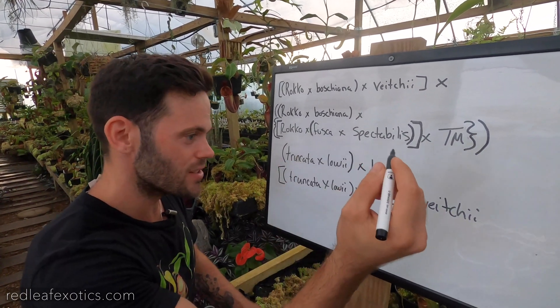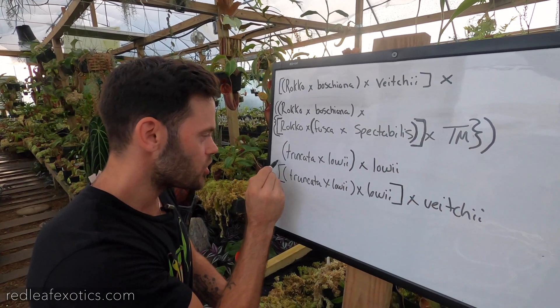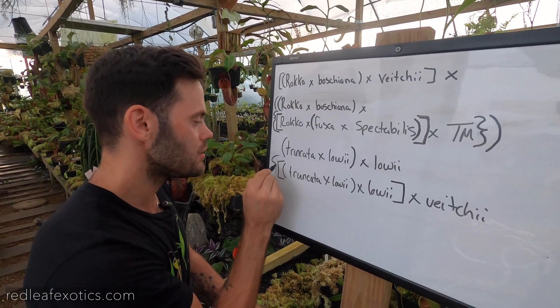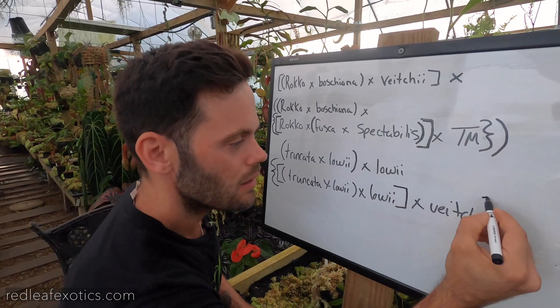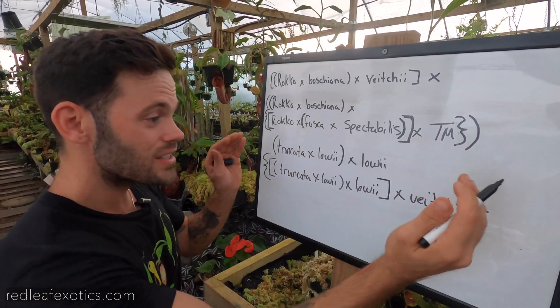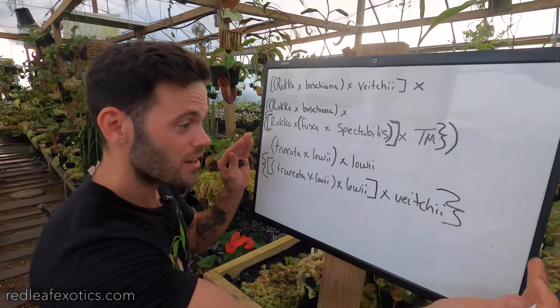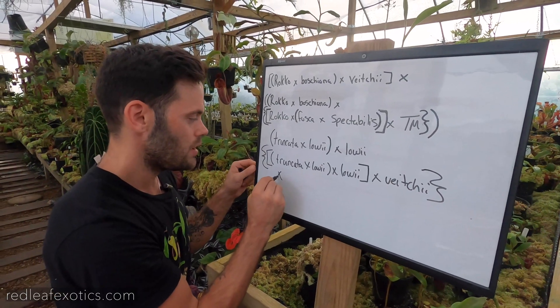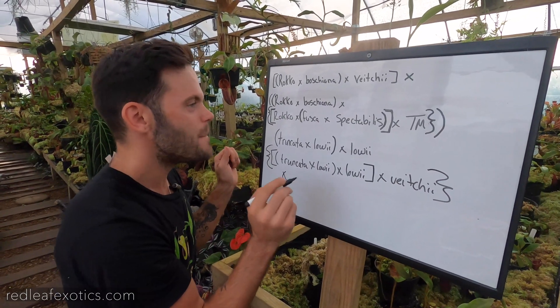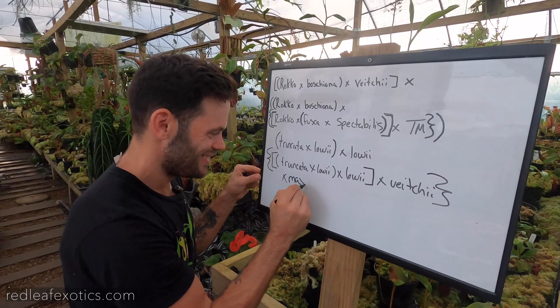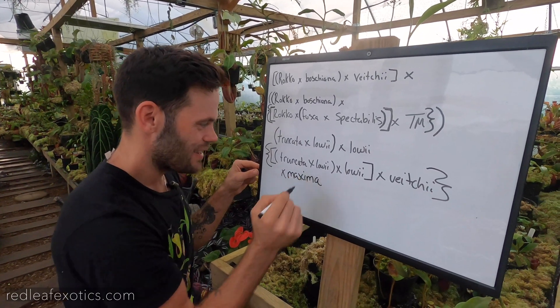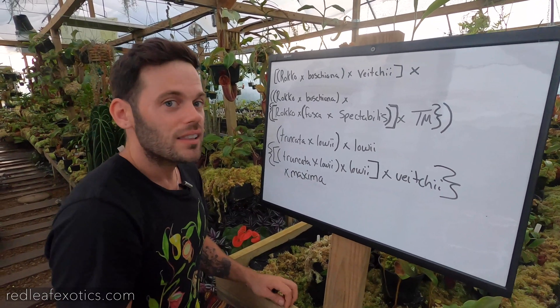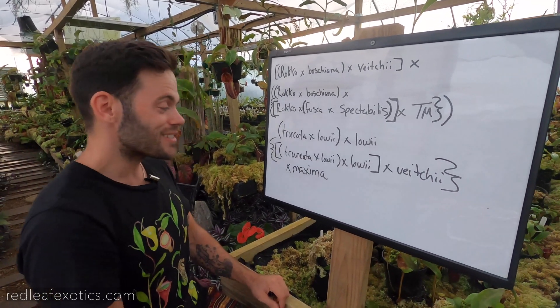And you're going to use your squiggle brackets or braces, they're called. So this is now one big hybrid that I'm going to cross with something else. And let's say we're going to add it to Maxima. Maxima. So I have this huge hybrid cross with Maxima. Let's just say I'm going to add something else. Woohoo!